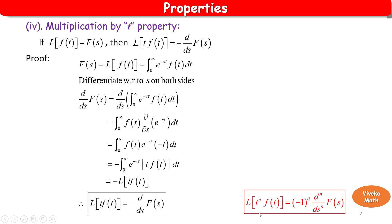In general, L of t to the power n into f(t) equals minus 1 to the whole power n into d to the power n by ds to the power n of F(s).